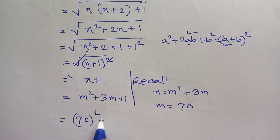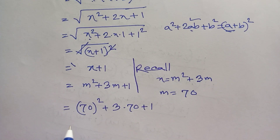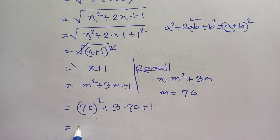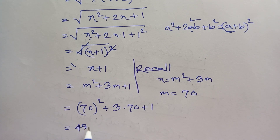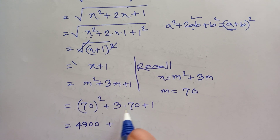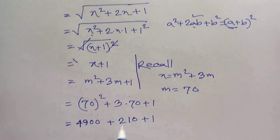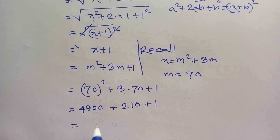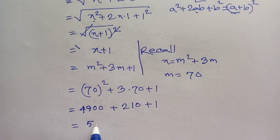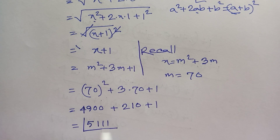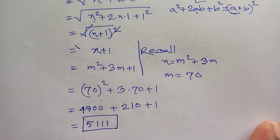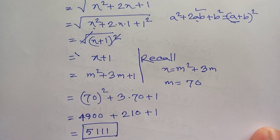Now recall m equals 70. Substituting: 70²+3(70)+1 = 4900+210+1 = 5111. This is the final value of this math problem. Thanks for watching — please subscribe to my channel for more videos!